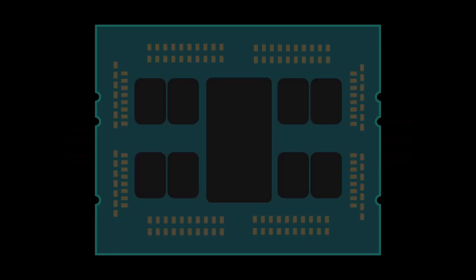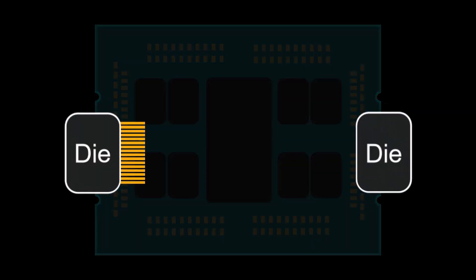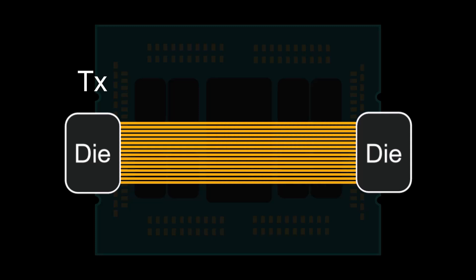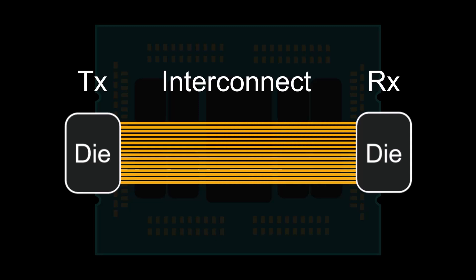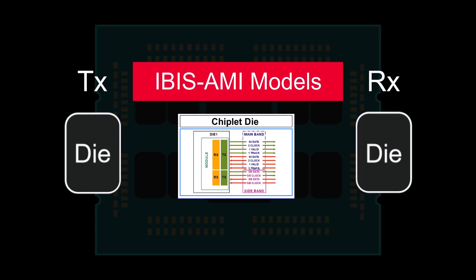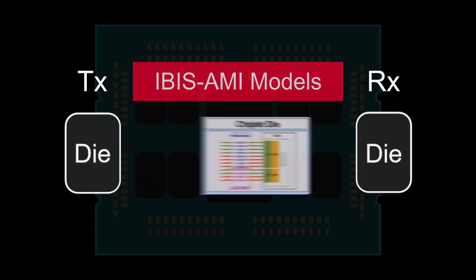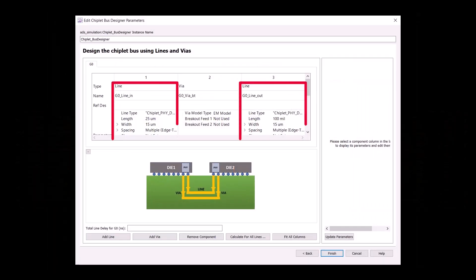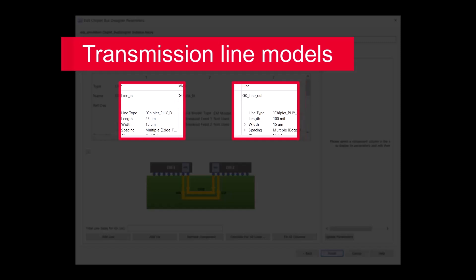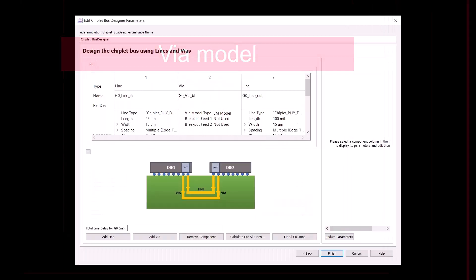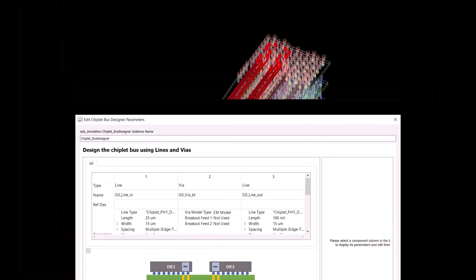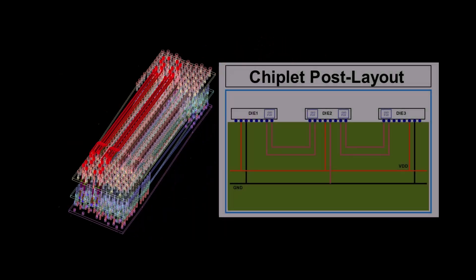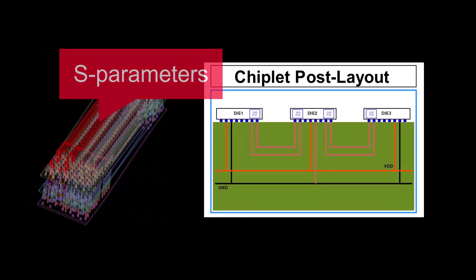But wait, there's more! You can easily simulate and predict your chiplet system behavior from TX interconnect to RX before production. You can create IBIS AMI models for your transmitter and receiver. For the interconnect, the Chiplet Bus Designer is the perfect choice to model it — the transmission lines and vias — and you can configure them all in a single window. If you have an EM extracted interconnect, you can place the S-parameters in a post-layout component.